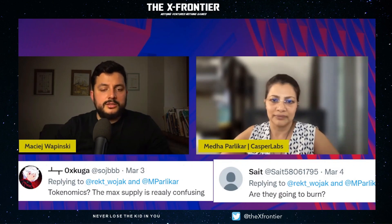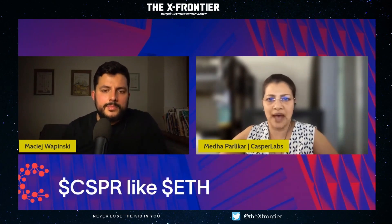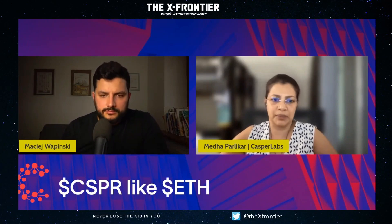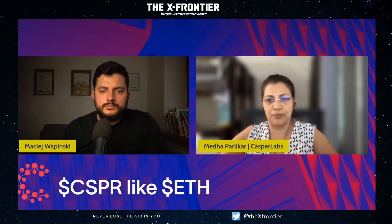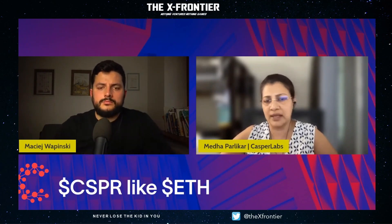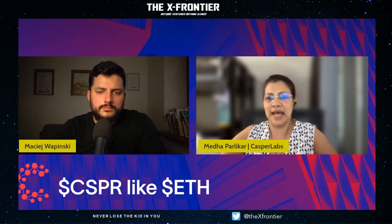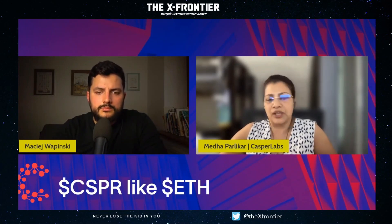The question is about max supply being confusing and whether there are plans to burn tokens. You have to think of CSPR exactly the same as ETH — Ethereum doesn't have a maximum supply either, for many many years. They just implemented EIP-1559 to start burning transaction fees, but before that Ethereum was a fully inflationary supply, and Casper is exactly the same. On mainnet the protocol will mint new tokens at a rate of 8% per year.